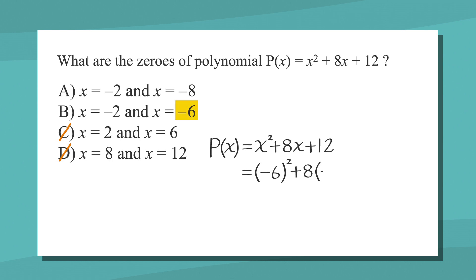We have negative 6 squared plus 8 times negative 6 plus 12. That gives us 36 minus 48 plus 12. And would you look at that? We've found our second zero. Negative 2 and negative 6 are both zeros of the polynomial, so answer choice B is correct.